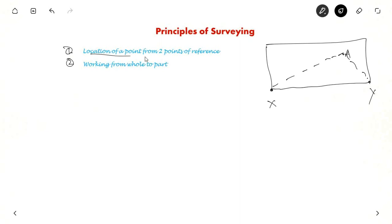This is the first principle of surveying. The second principle of surveying is that you should always work from whole to part. Why should you work from whole to part? Let us see with an example. Suppose this is the area to be surveyed.